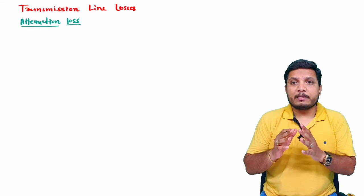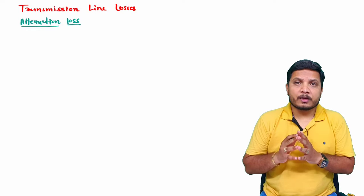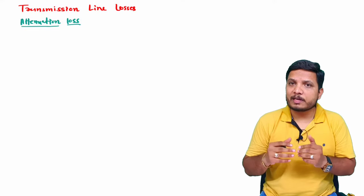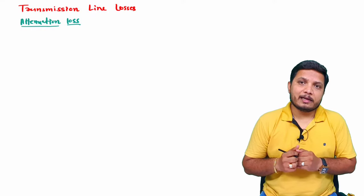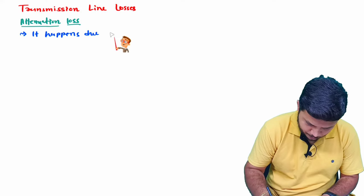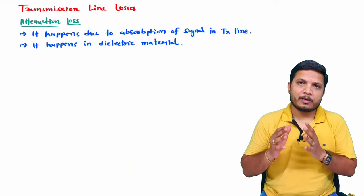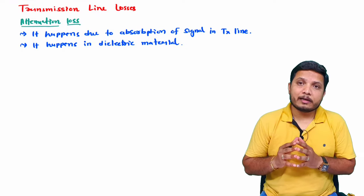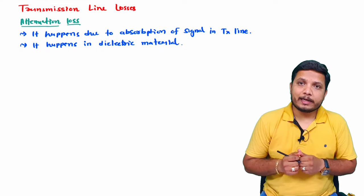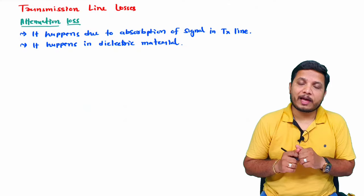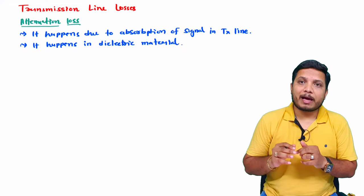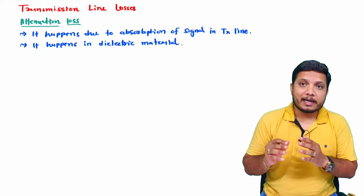Attenuation loss happens in a transmission line due to absorption of signal. You will usually observe this absorption of signal happening in dielectric material. If you want to calculate attenuation loss in terms of energy, the basic formula is: 10 log of (EI minus ER) divided by ET.